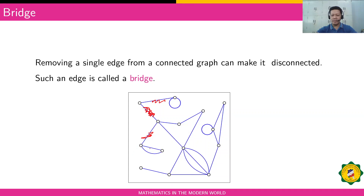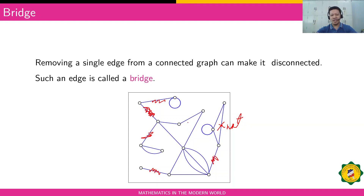Is this a bridge? Yes, because this vertex will be disconnected if this edge is removed. Is this a bridge? No, because there's a line here that connects the other part. Is this a bridge? No, because this line connects it to the other part. How about this one? Yes, because when you remove it, this part becomes disconnected. How about this one? No, it's not a bridge — there's a line that connects that part to the bigger part.